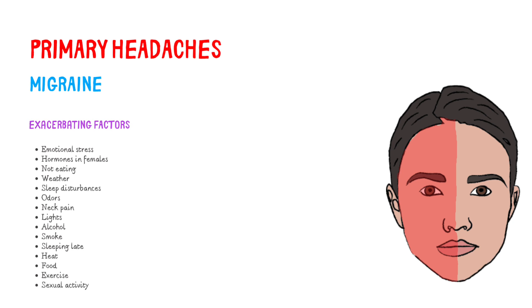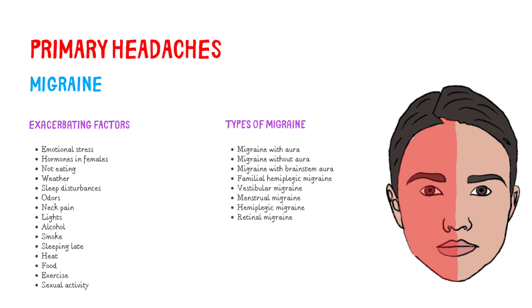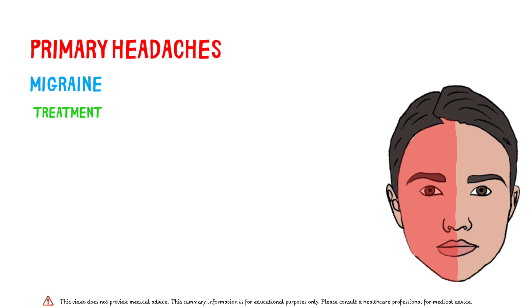Emotional stress, hormonal fluctuations, not eating, weather, and many other factors can be triggers. There are different types of migraine, which we will not go into detail here. Patients' medical history, the severity of their attacks, and pregnancy or breastfeeding may change the treatment. For patients presenting with significant nausea or vomiting, a non-oral agent may be preferred.